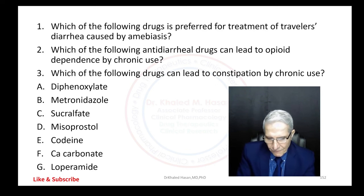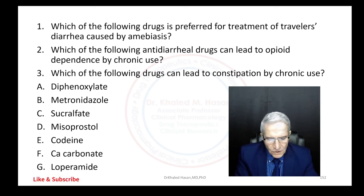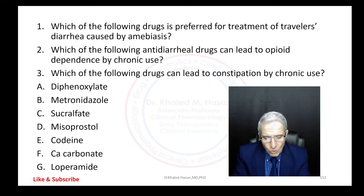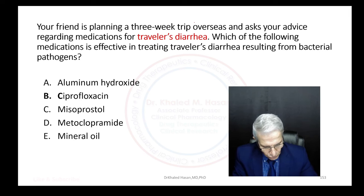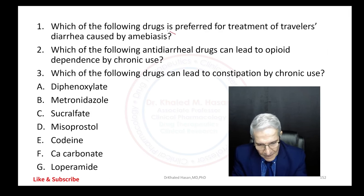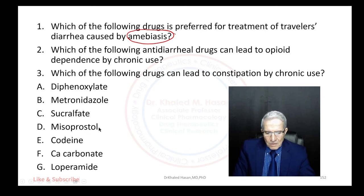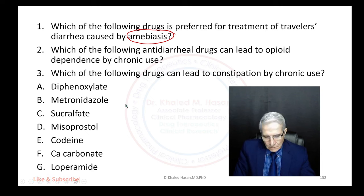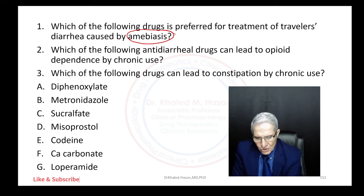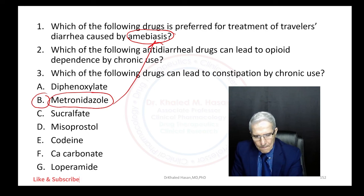Now for the active learning questions. The first question asks: which drug is preferred for treatment of traveler's diarrhea caused by amoebiasis? First, is amoebiasis bacterial or protozoal? It is protozoal. From the answer choices — diphenoxylate, metronidazole, sucralfate, misoprostol, codeine, calcium carbonate — the correct answer is metronidazole, used for diarrhea caused by amoebiasis.